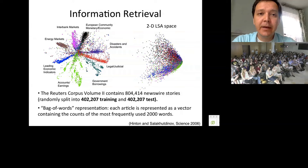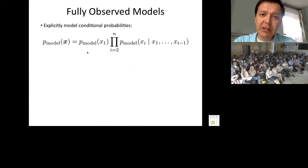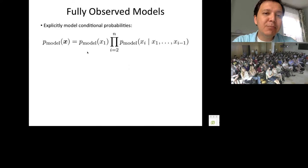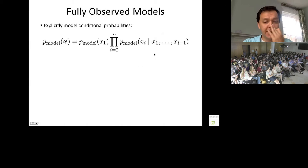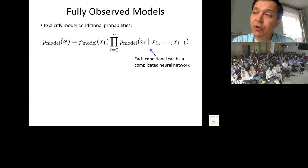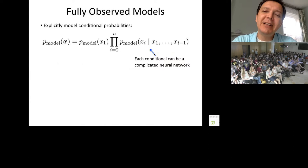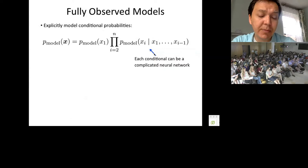Now let's jump into generative models. One class that has been shown to work quite well recently is to explicitly model conditional probabilities. I can write the joint probability of my data using the chain rule: probability of the first dimension times conditional probabilities of each subsequent dimension given the previous ones — a standard probability decomposition. Each conditional can be a complicated multilayer neural network, predicting the value of a single pixel given the surrounding or previously predicted pixels.